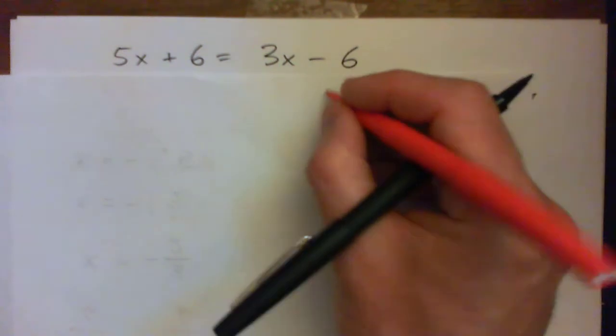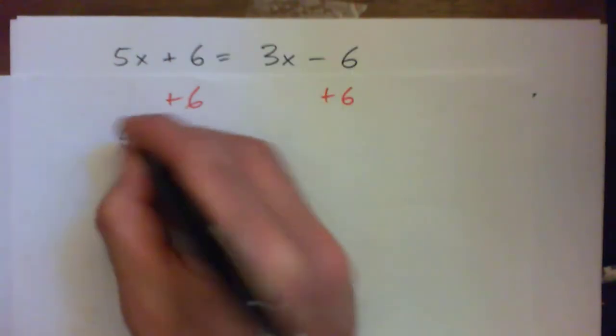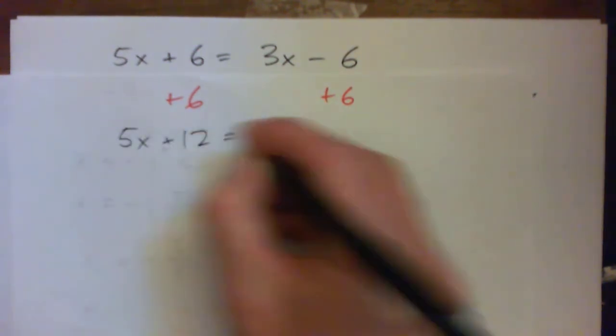We could start out by, I don't know, adding 6 to get rid of this thing, right? I could add 6. And so we would get 5x plus 12 equals 3x.